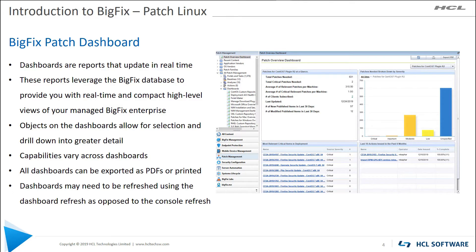The dashboard gives me a very quick view of what's relevant for my environment. In this example, I've got two critical patches — the lower left-hand corner always shows you what's critical and how many endpoints need that critical patch. The upper left-hand corner gives me information on patches for CentOS, looking at one specific site, how many patches are relevant, and how many endpoints I have.